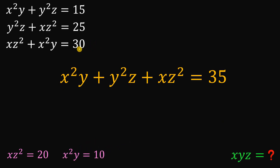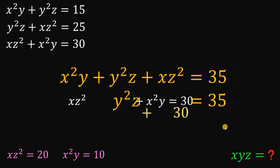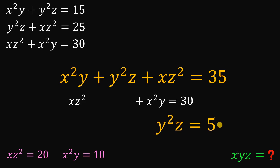Finally, let's use the third equation, which says that xz squared plus x squared y equals 30. So y squared z plus 30 equals 35. Subtracting 30 from both sides, we get y squared z equals 5.